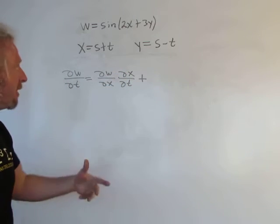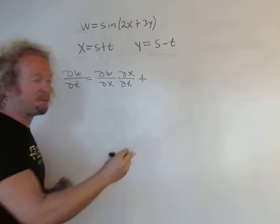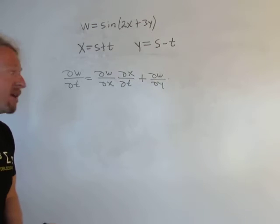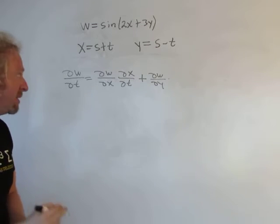Plus, then we do the same thing for the other variable, for y. So it would be del w, del y, times the derivative of the inside. So that would be del y, del t.